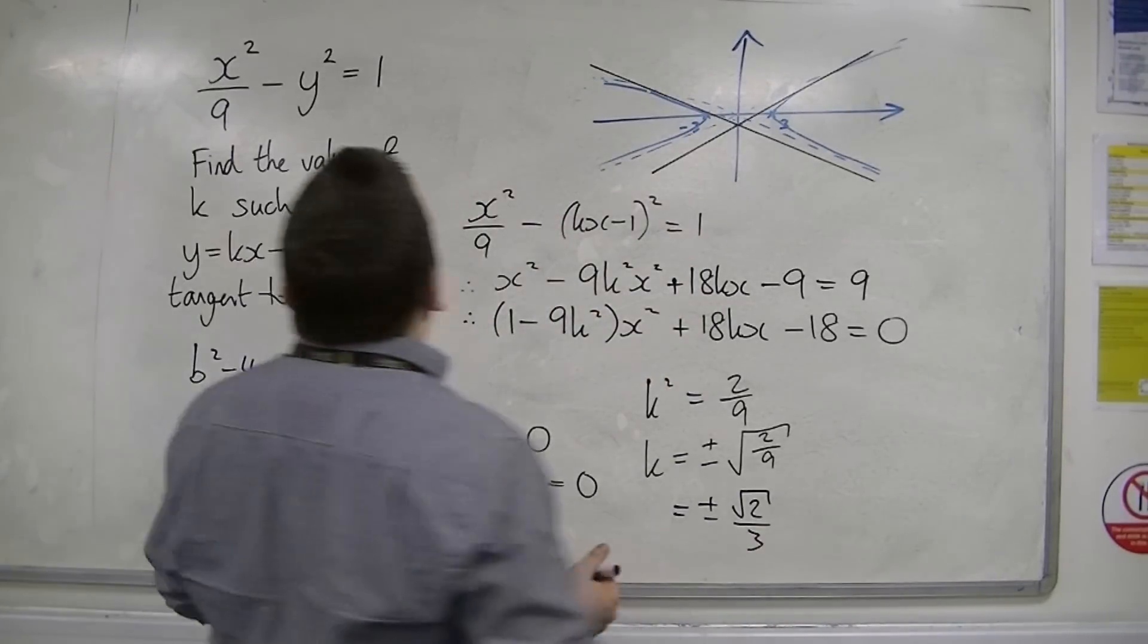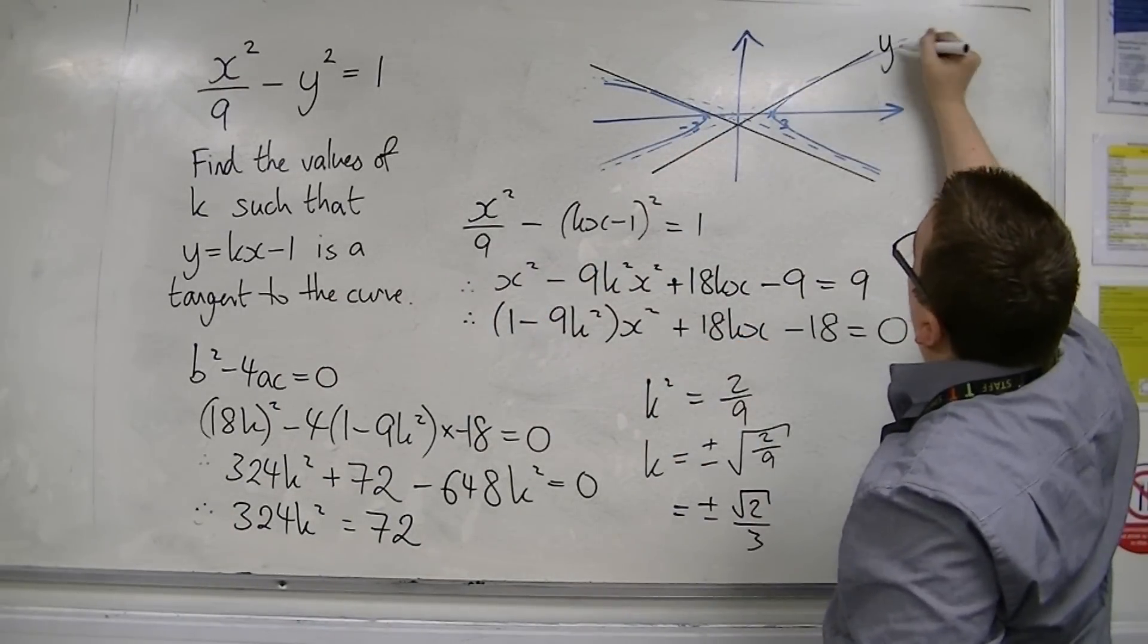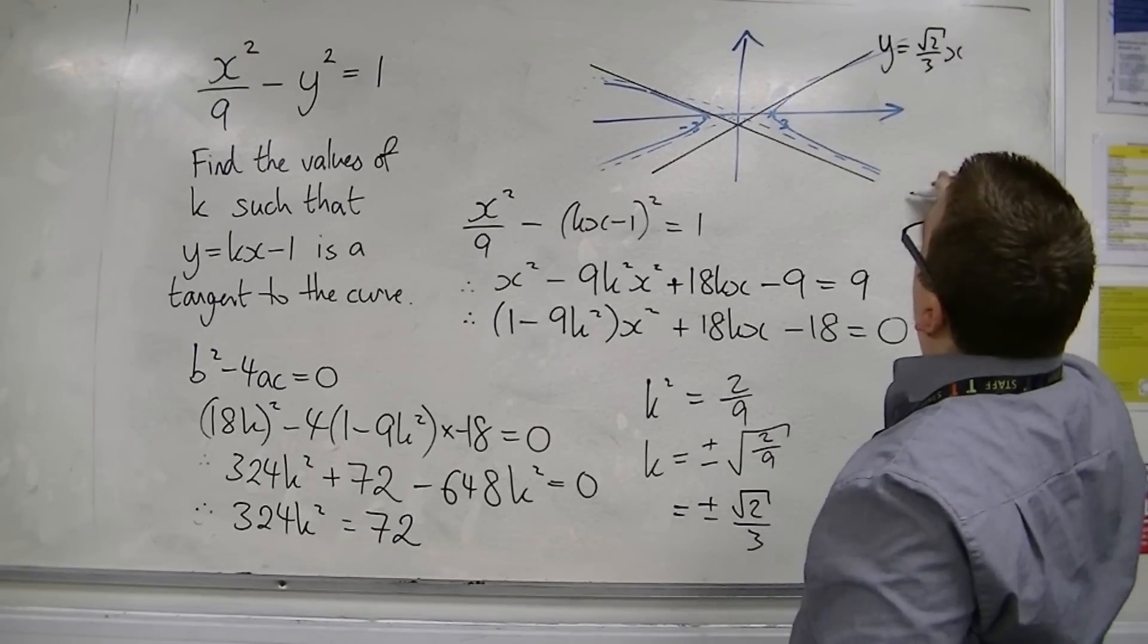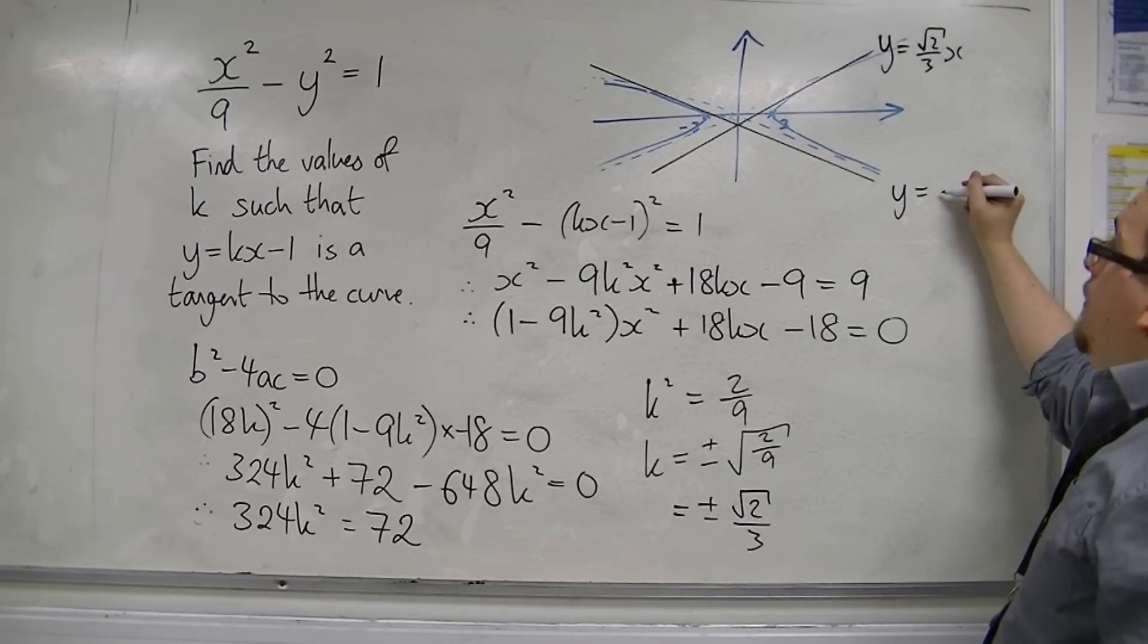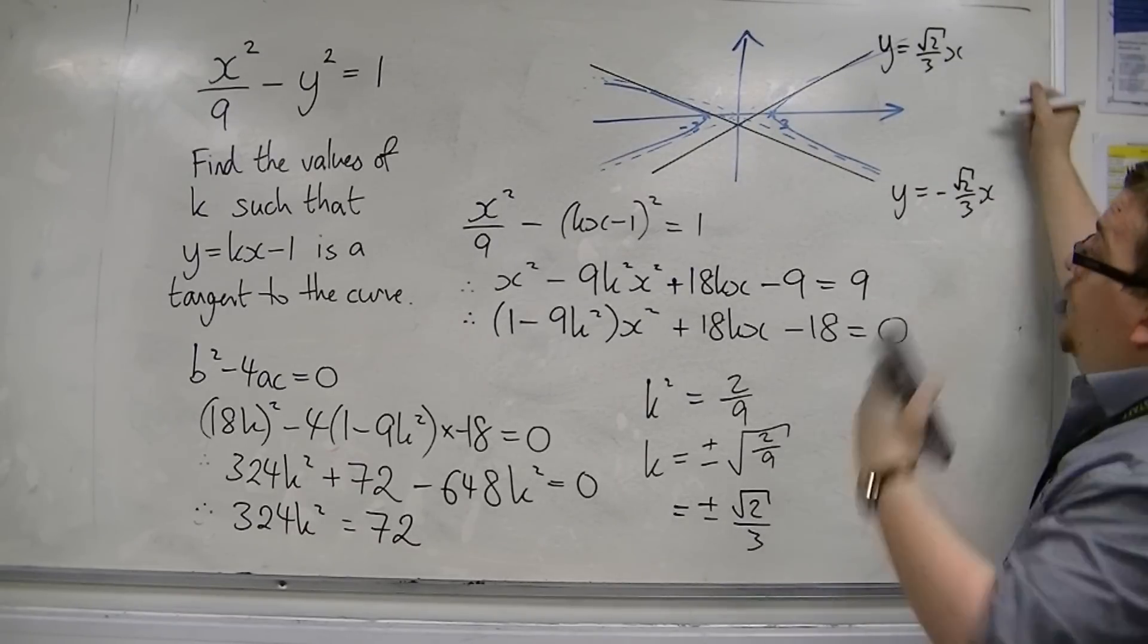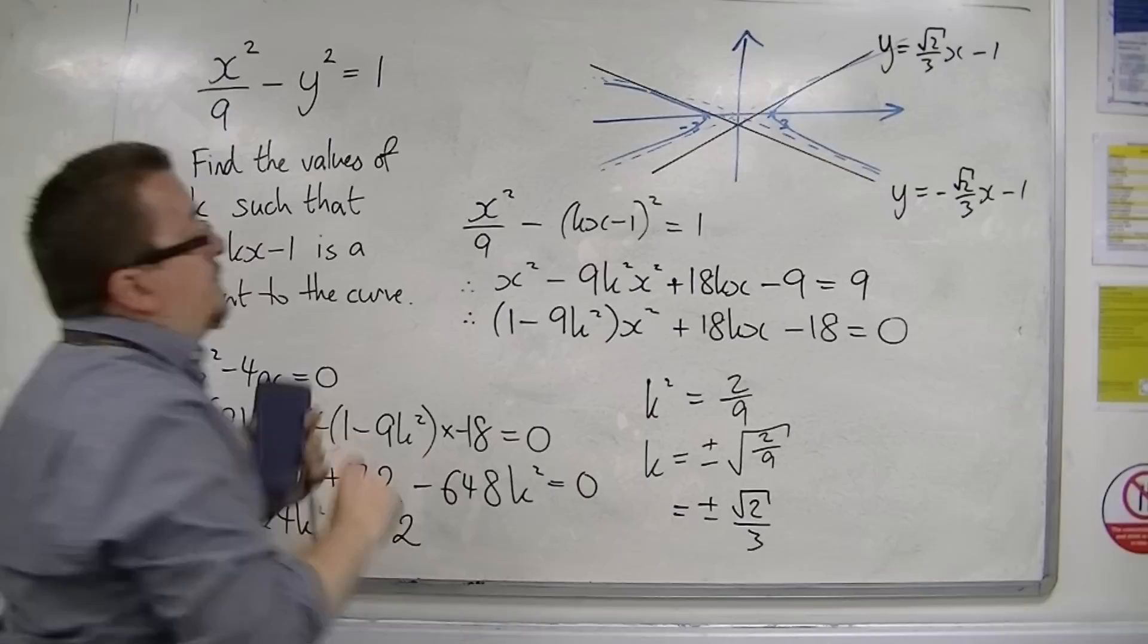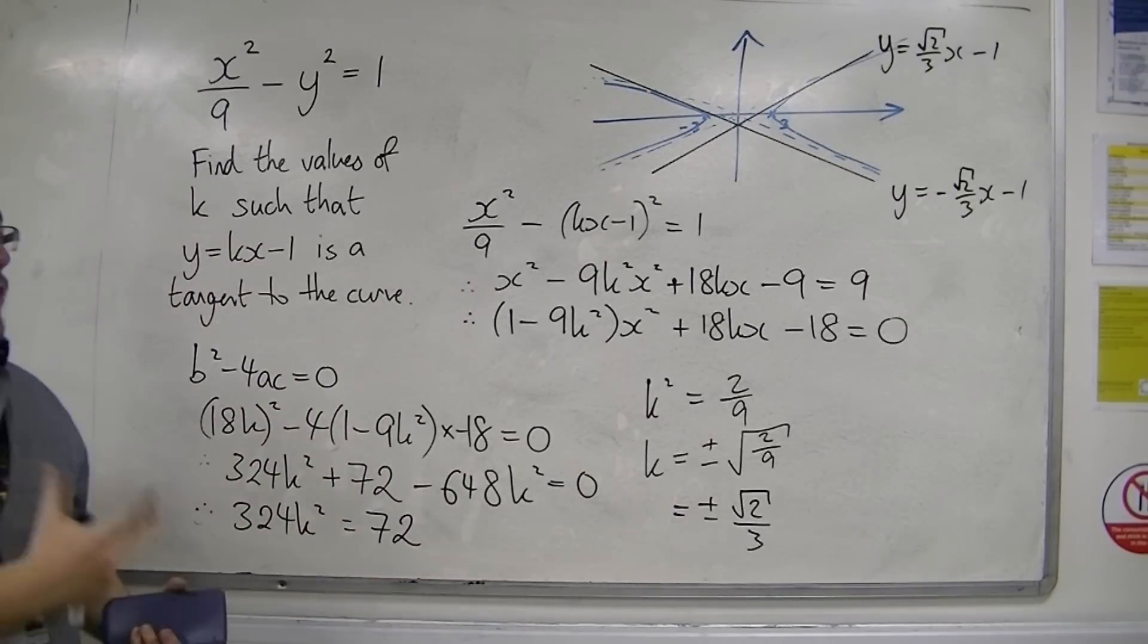So the equation of this tangent is y is equal to root 2 over 3x, and the equation of this tangent is y is equal to minus root 2 over 3x. Oh, and take away 1, sorry. So they're the equations of the tangents that were required here.